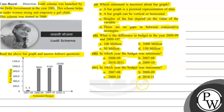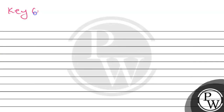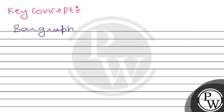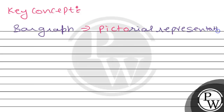So, we have a bar graph given. First, I will tell you the key concept that will help in solving this question. A bar graph is a pictorial representation of data.